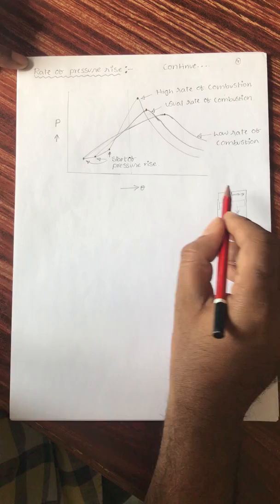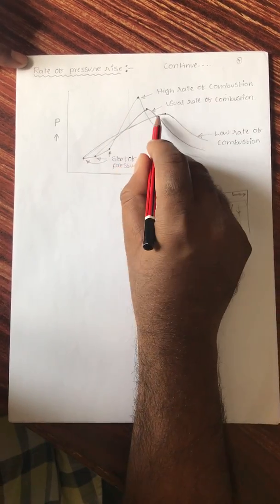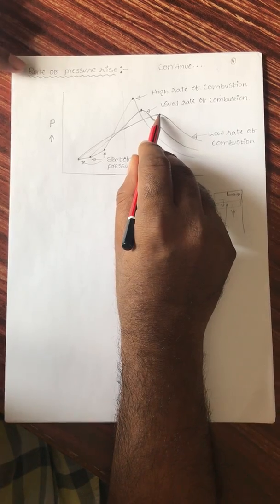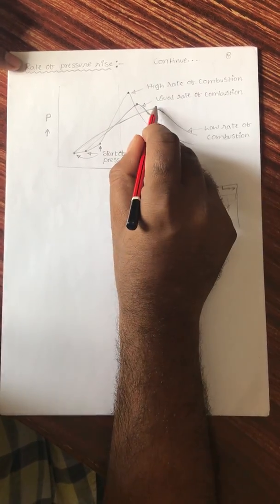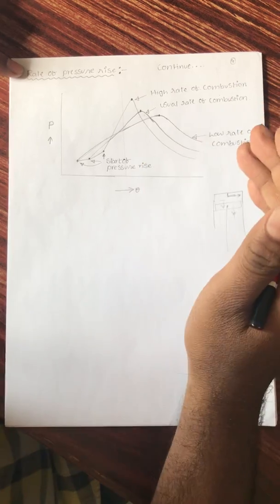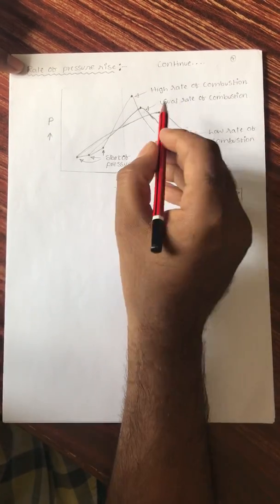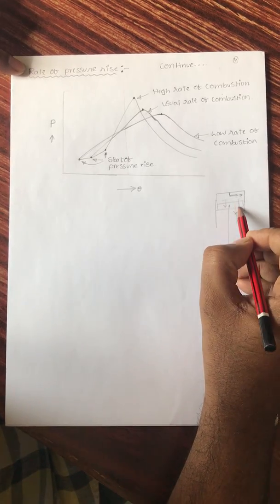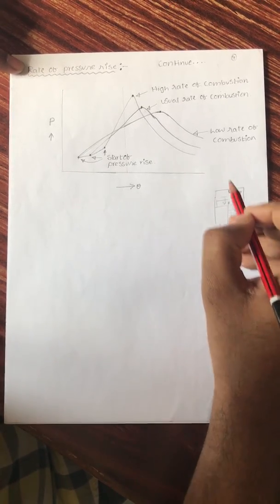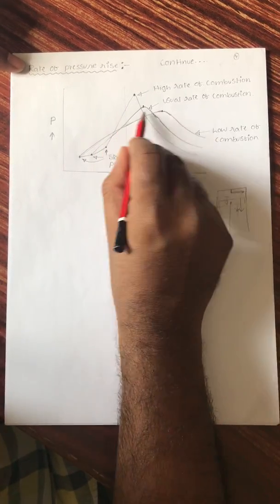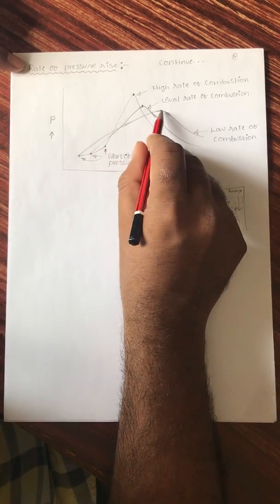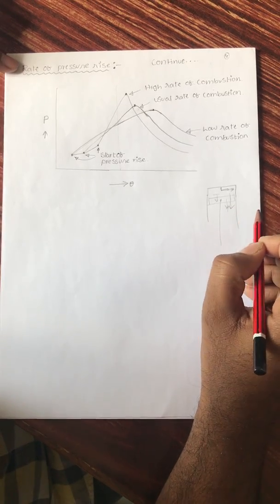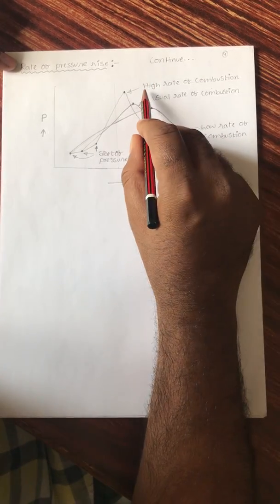As a result, the maximum pressure and maximum temperature are very low compared to the usual or higher rate. These peak values occur far away from TDC — by the time maximum pressure is reached, the piston has already come down significantly. This results in very low work output from the low combustion rate.